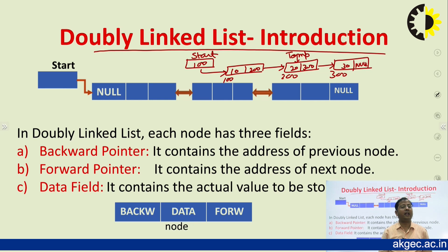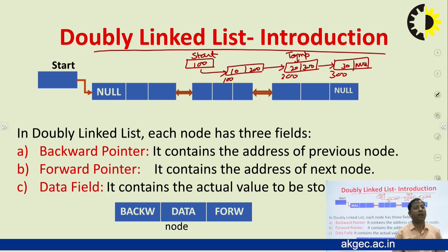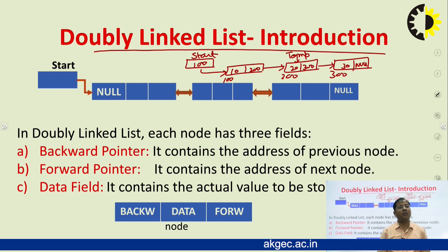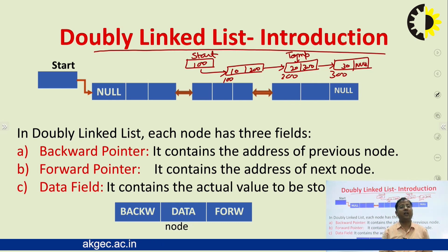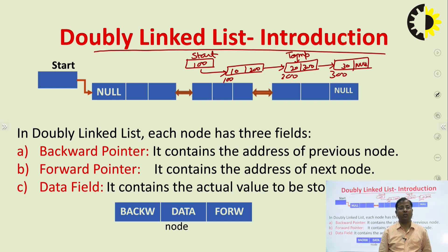We can access the next node using the arrow-next operator. But from the second node, we cannot get the address of the first node, or from the third node, we cannot get the address of the second node. We cannot traverse in the previous direction or access the previous node from the current node.